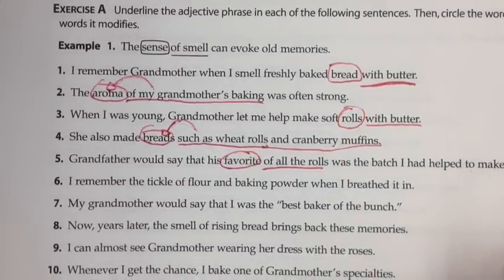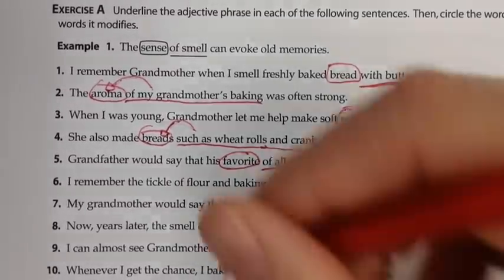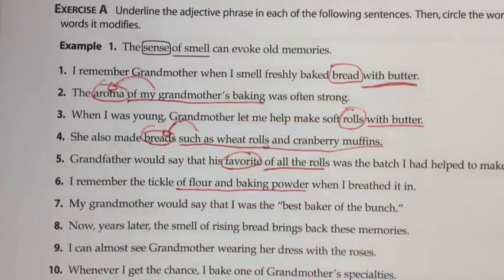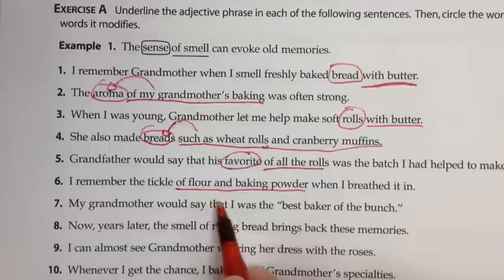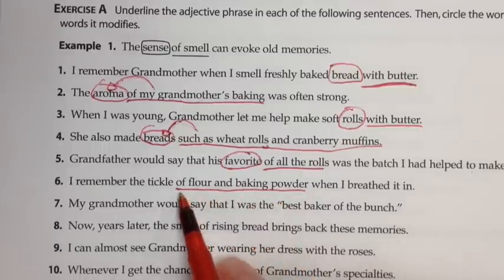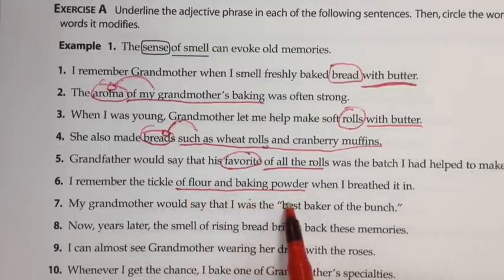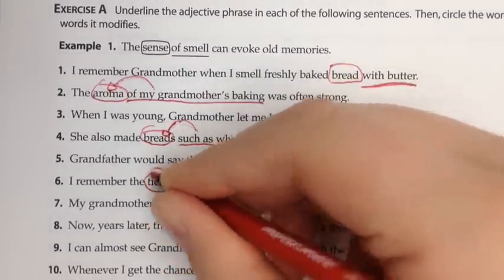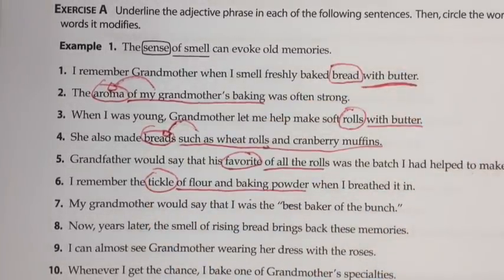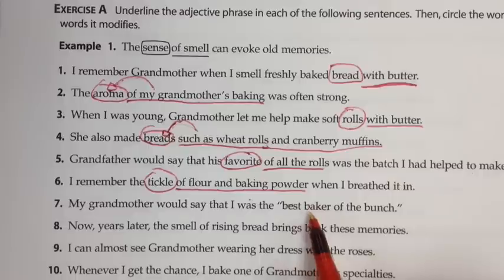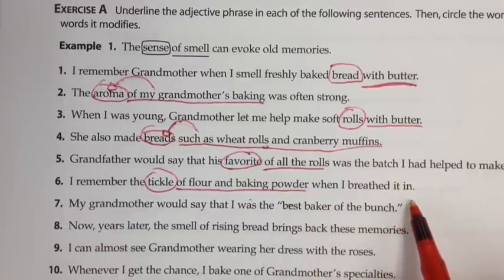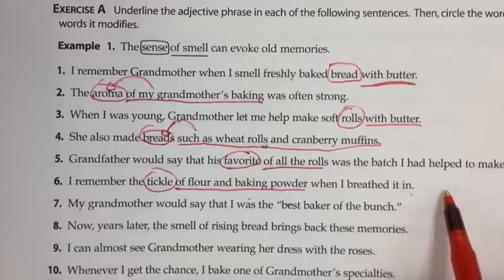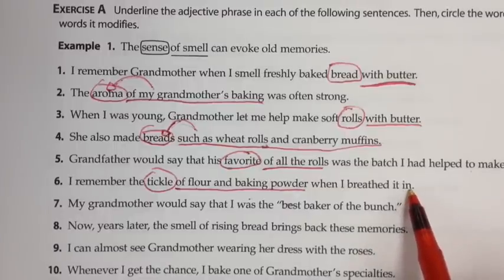Number six: I remember the tickle of flour and baking powder when I breathed it in. 'Of flour and baking powder' — 'of' is a preposition, here are our objects, and these go back to the word 'tickle' to tell us what kind of tickle. The tickle of flour and baking powder. Over here we have 'in,' which can be a preposition, but since 'in' doesn't have a noun after it and there's no object, this is an adverb instead.